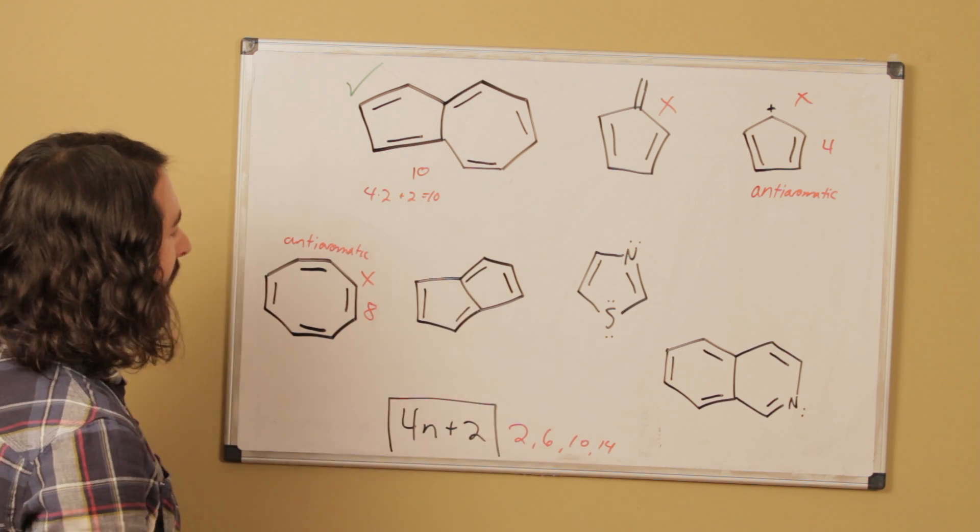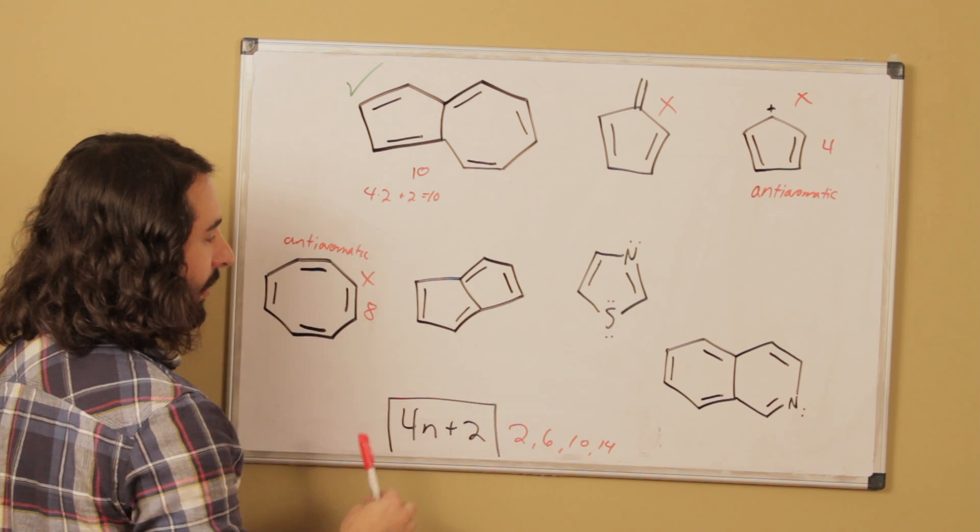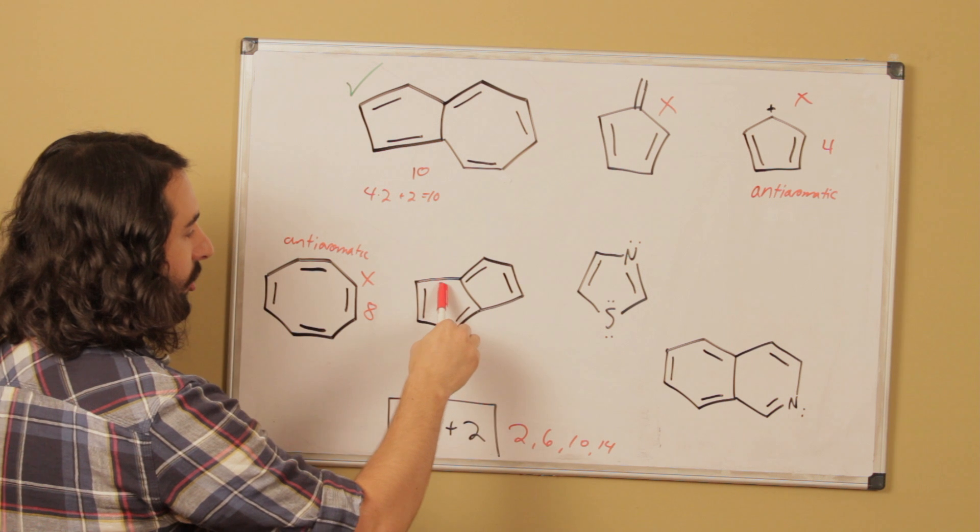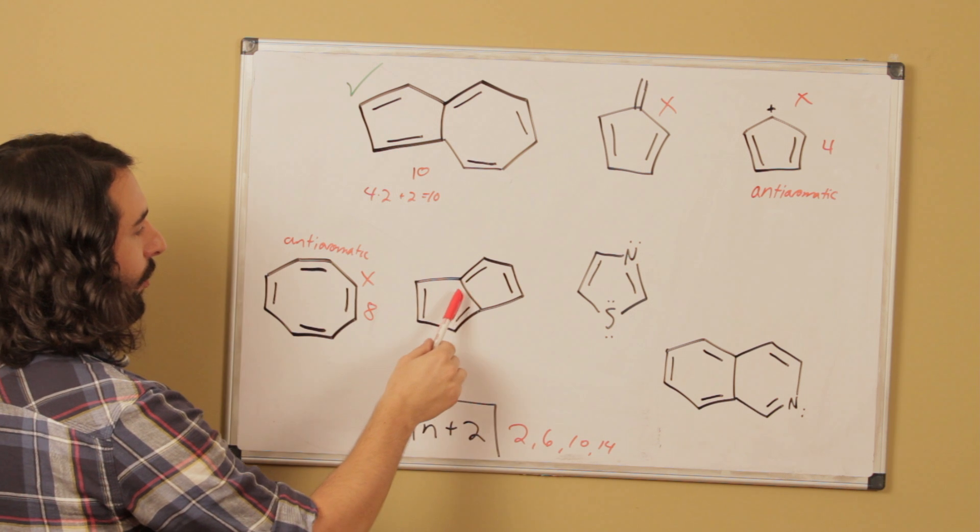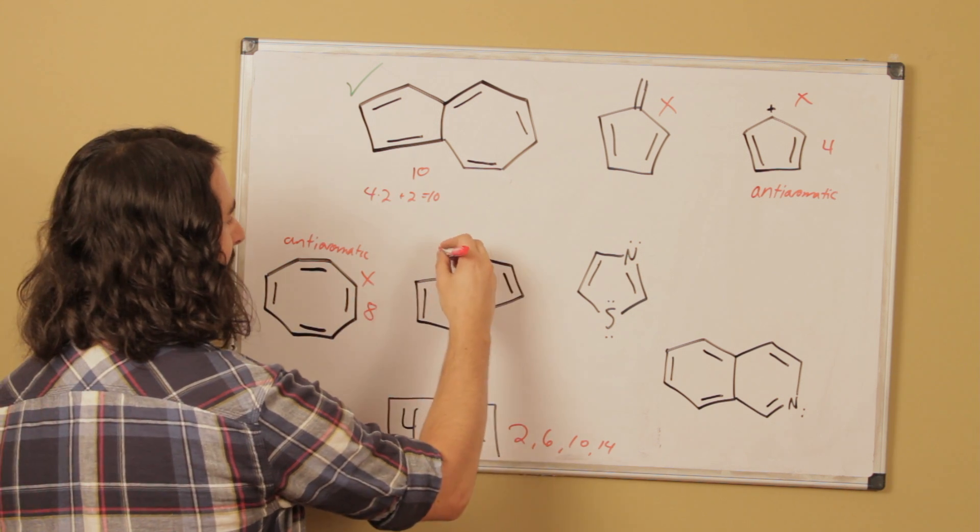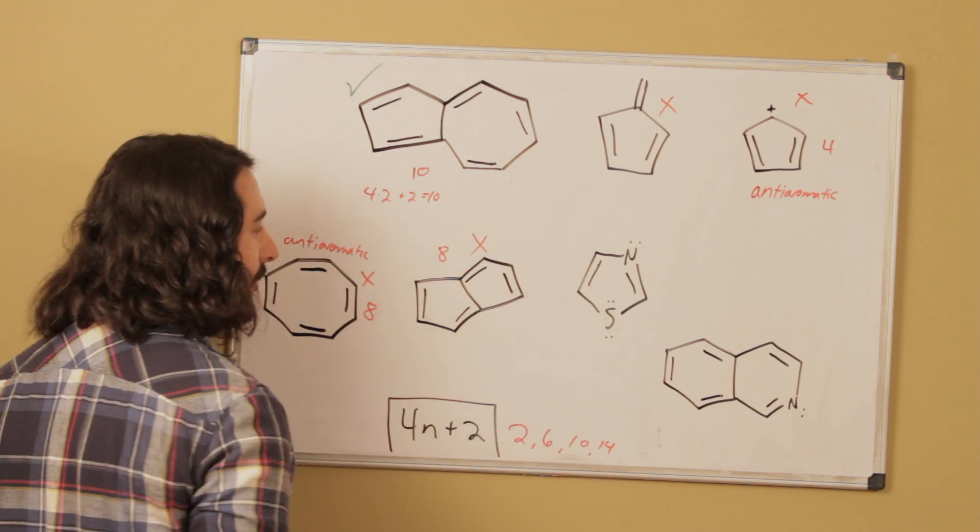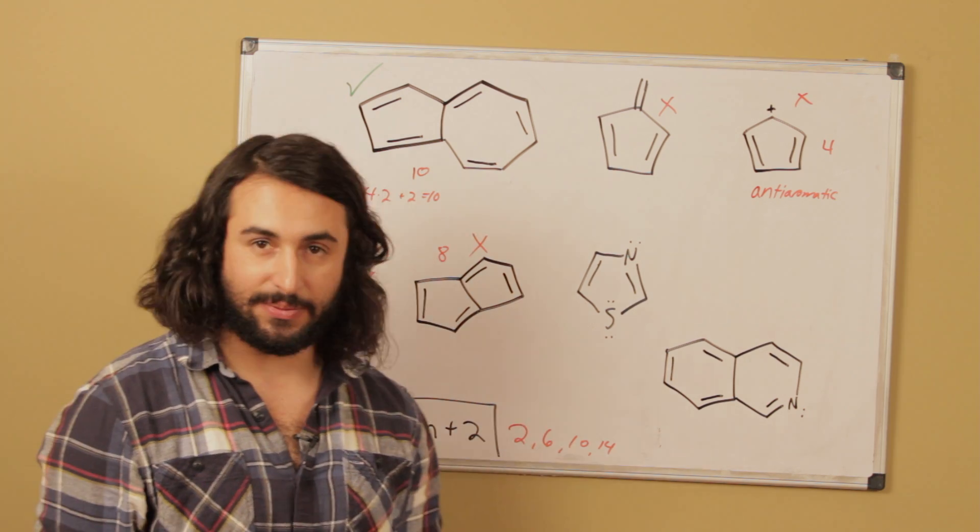Okay, looking at this one now, this is also fully planar and fully conjugated because we can push these pi electrons all the way around this ring system. But again, 2, 4, 6, 8, that's 8 pi electrons. That is not going to be aromatic because it does not satisfy Huckel's rule.